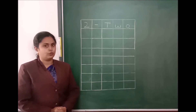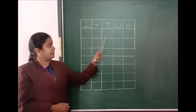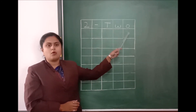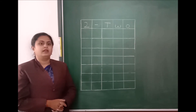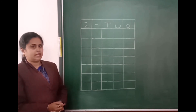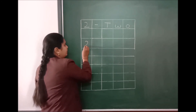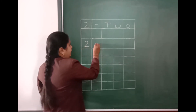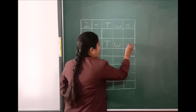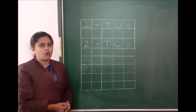Next spelling is 2. This is number 2, and the spelling is T, W, O — two. Now I will show you how to write the spelling. You also write with me. First write number 2, then dash, then write T, W, O — two.